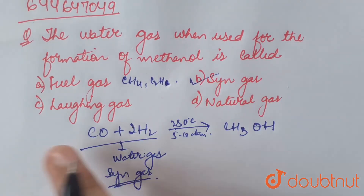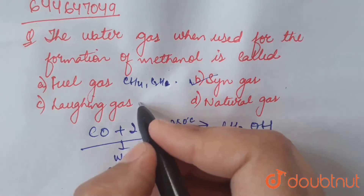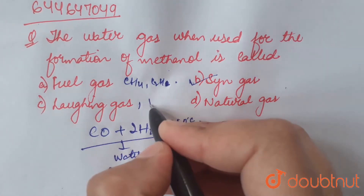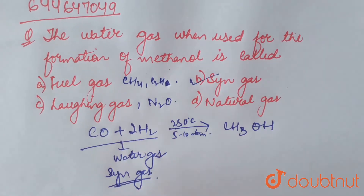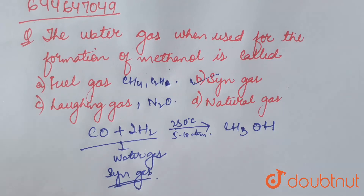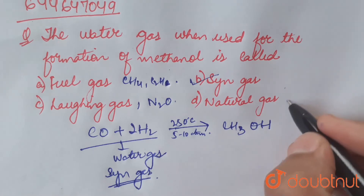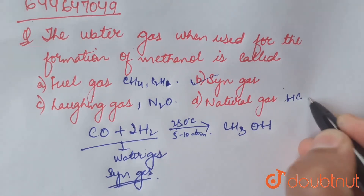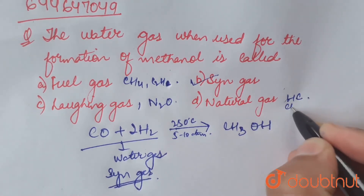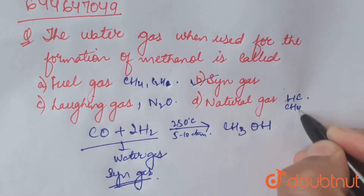Laughing gas is nitrous oxide (N₂O). Natural gas is a naturally occurring hydrocarbon gaseous mixture, particularly methane.